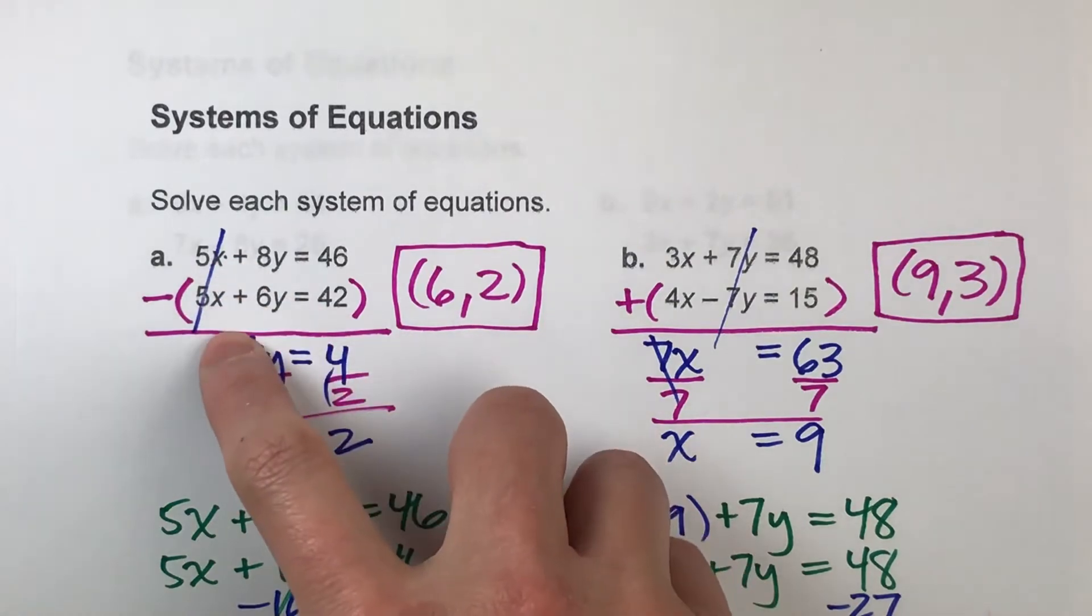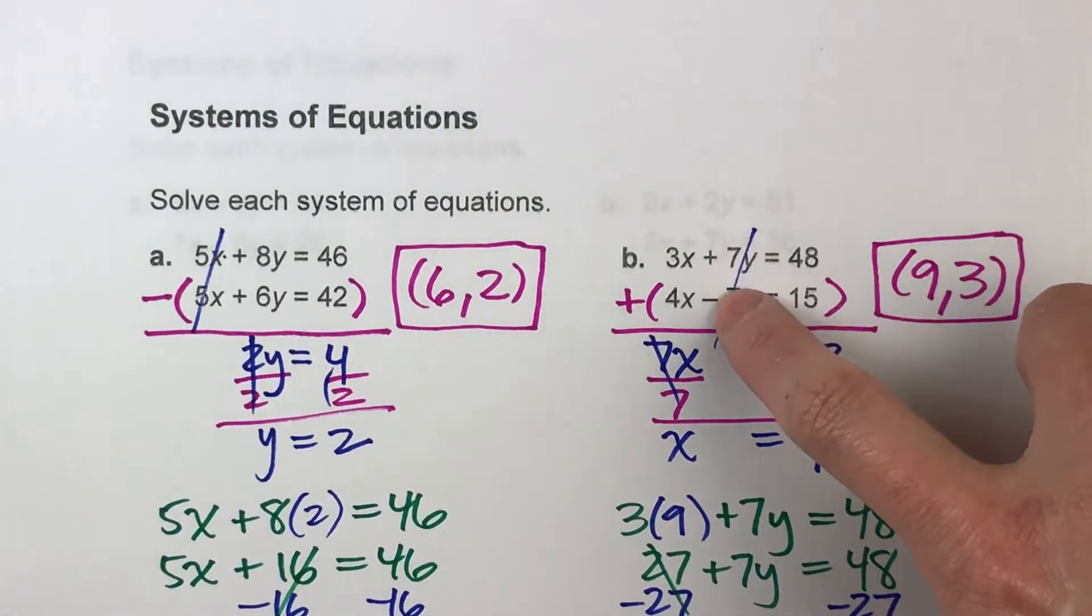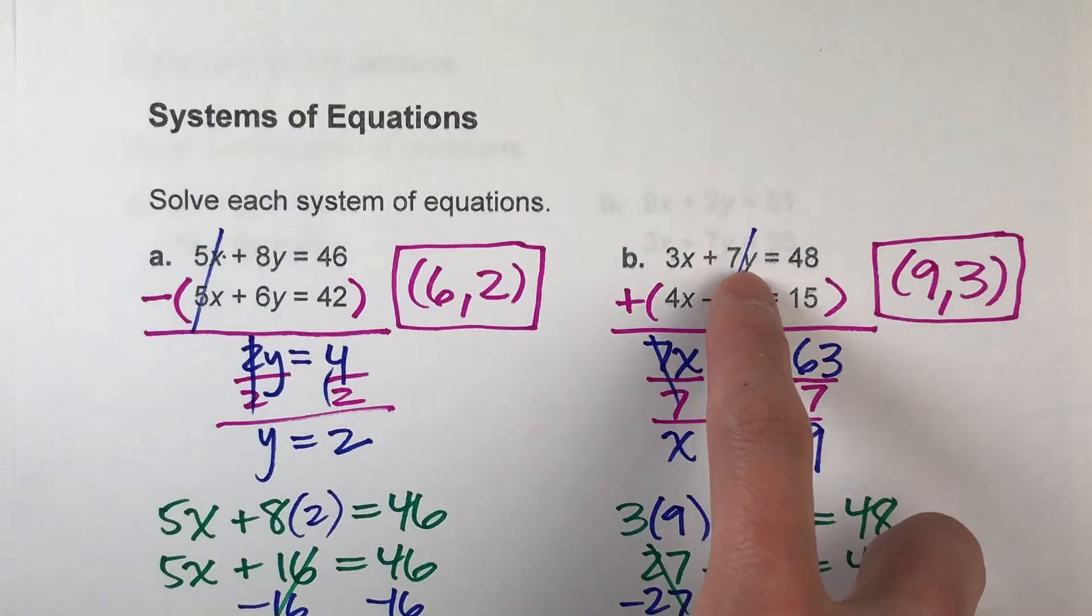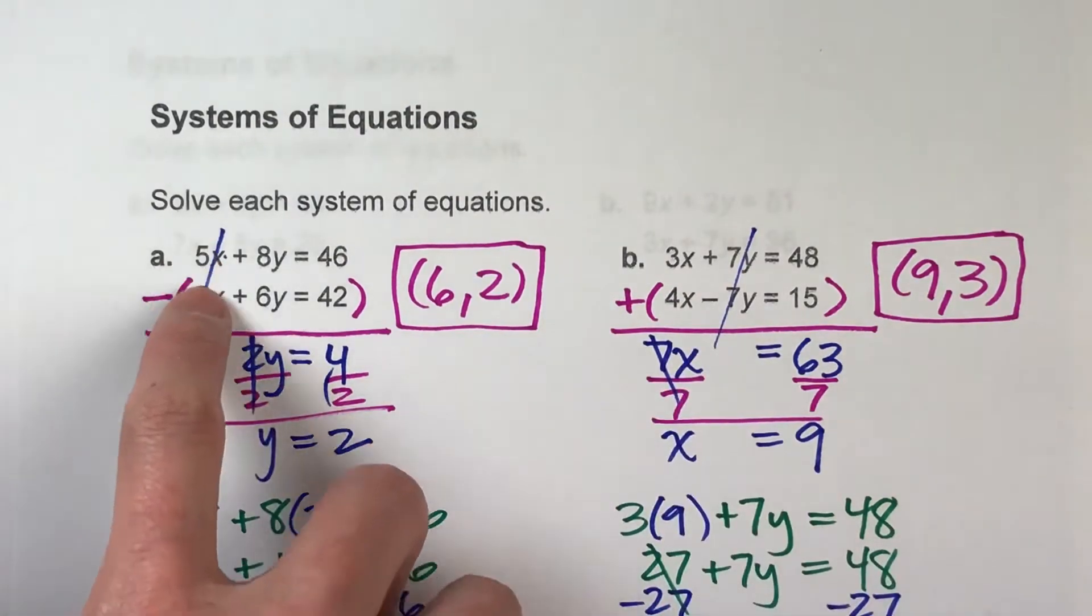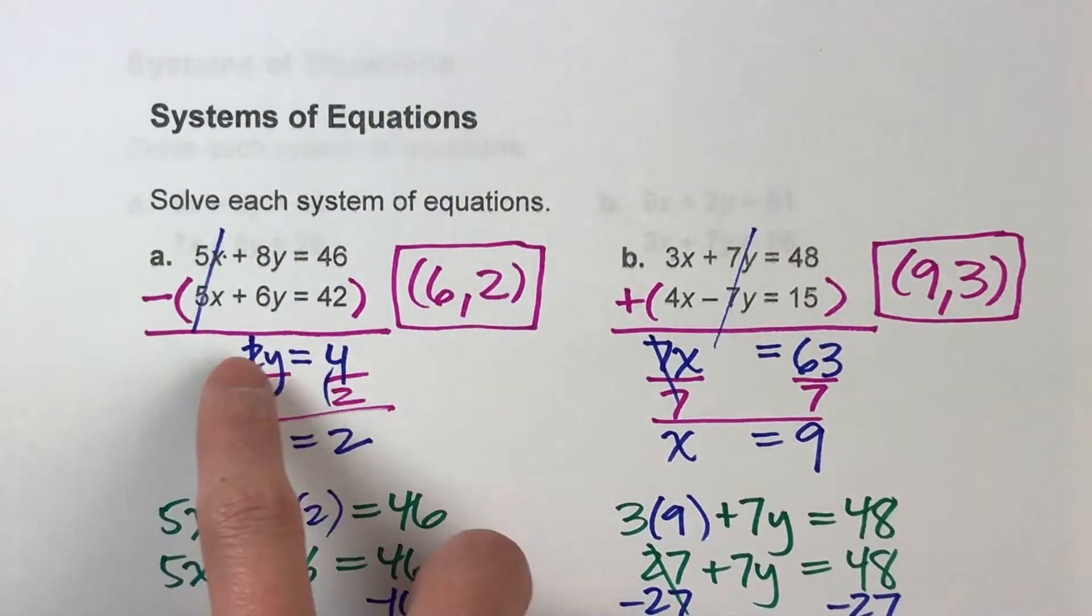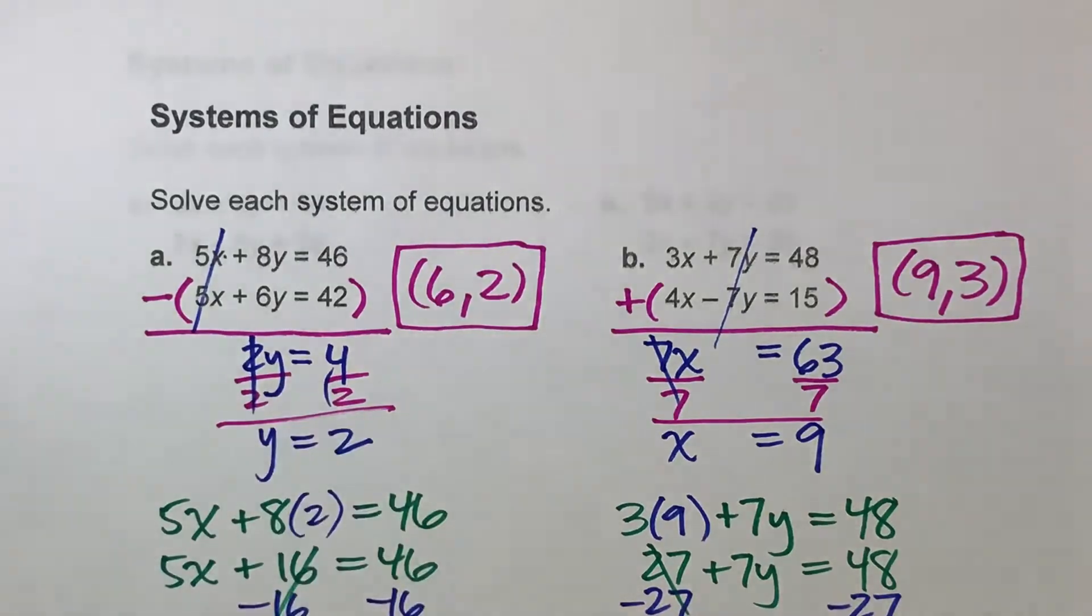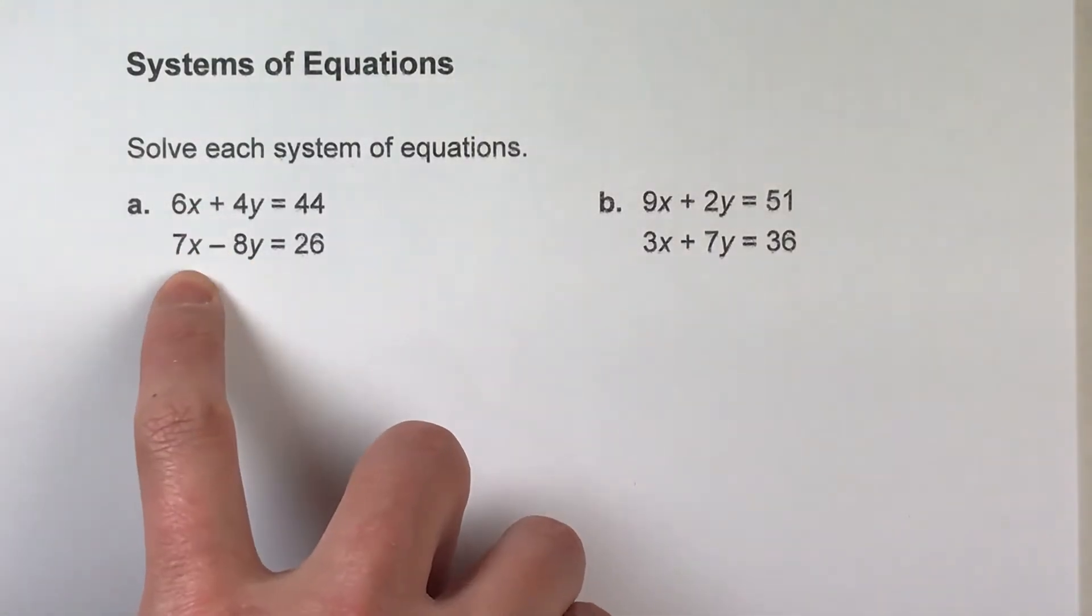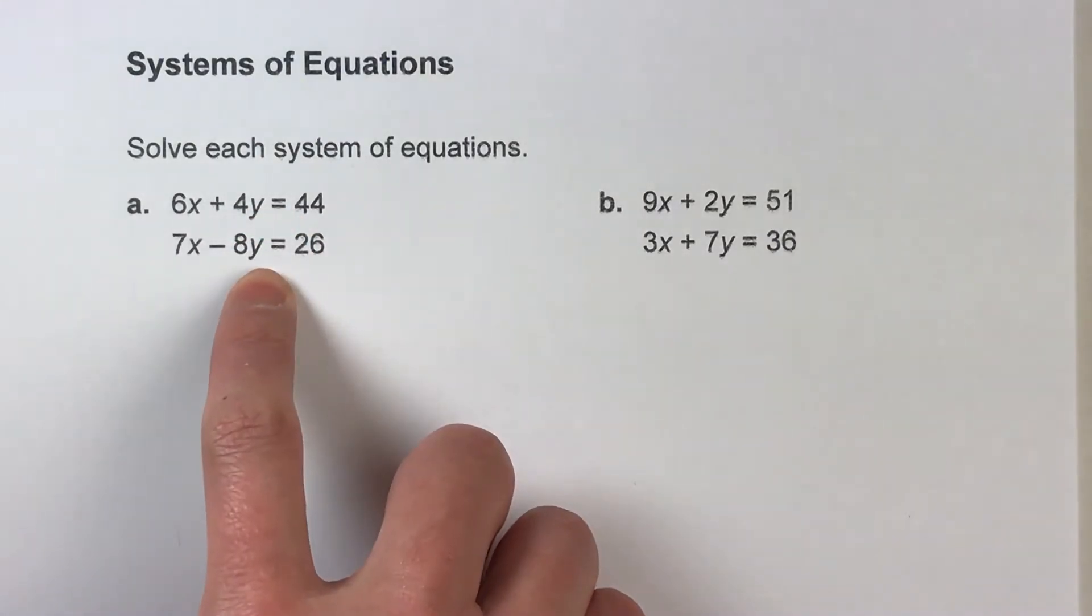Either both the same number and same sign, or same number in different signs, because then we can either add the equations together and eliminate one of the variables, or subtract the equations from each other and eliminate one of the variables.